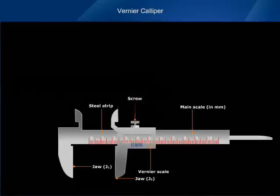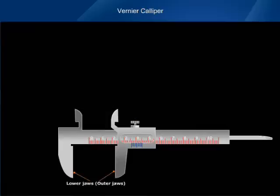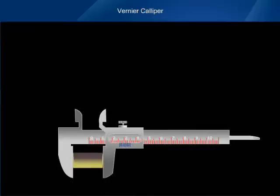The jaws J1 and J2 are parallel and are projected on either side of the main scale. The lower jaws are called outer jaws. They are generally used to measure the length or thickness of a given object and diameter of a sphere or external diameter of a cylinder.